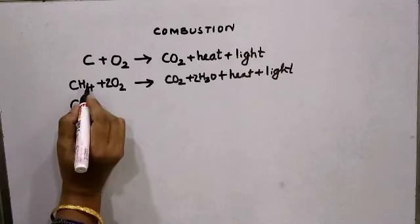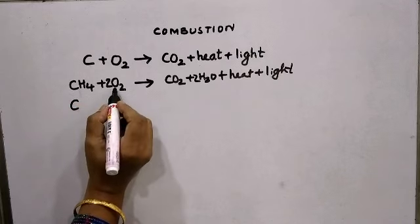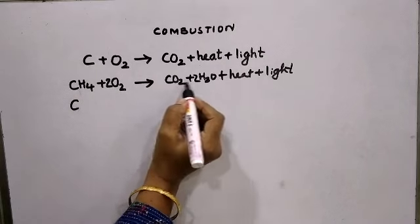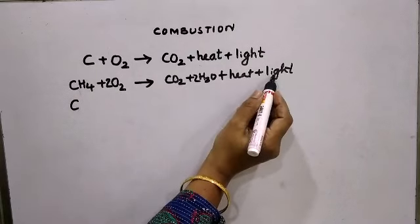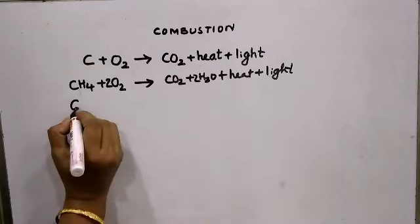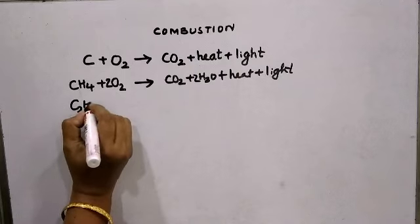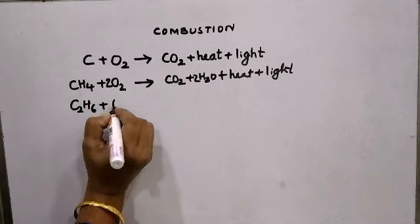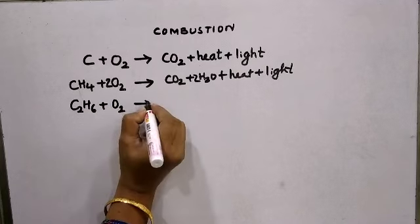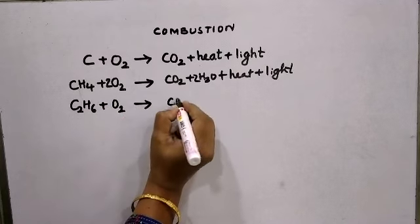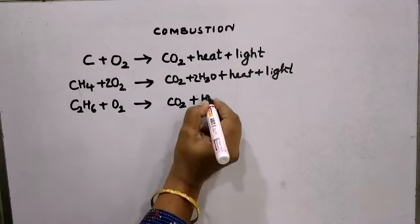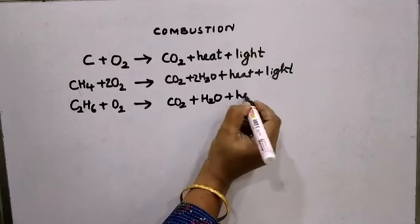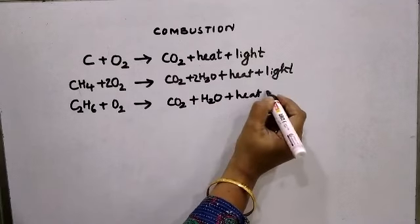This is the balanced combustion of methane. Methane burns in sufficient supply of oxygen to form carbon dioxide, water, heat, and light. Now let's take the next alkane — ethane. Ethane burns in sufficient supply of oxygen to form carbon dioxide, water, heat, and light.